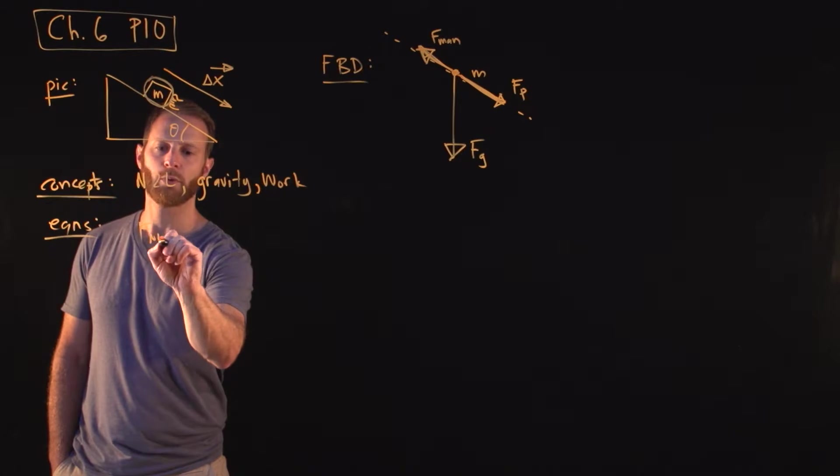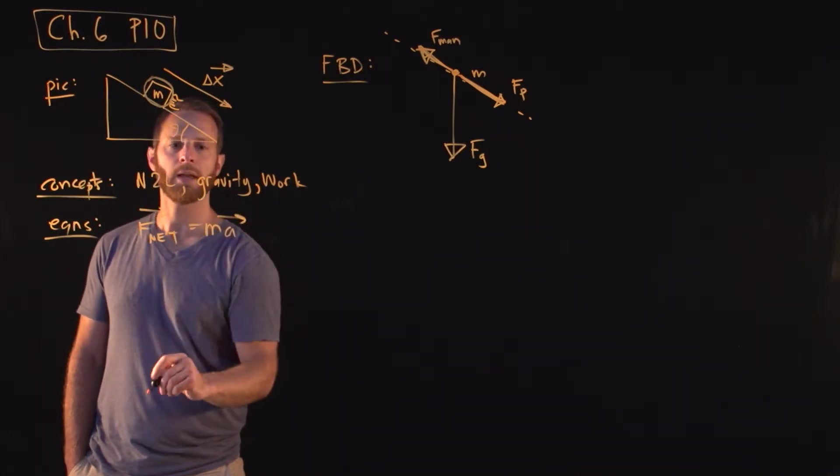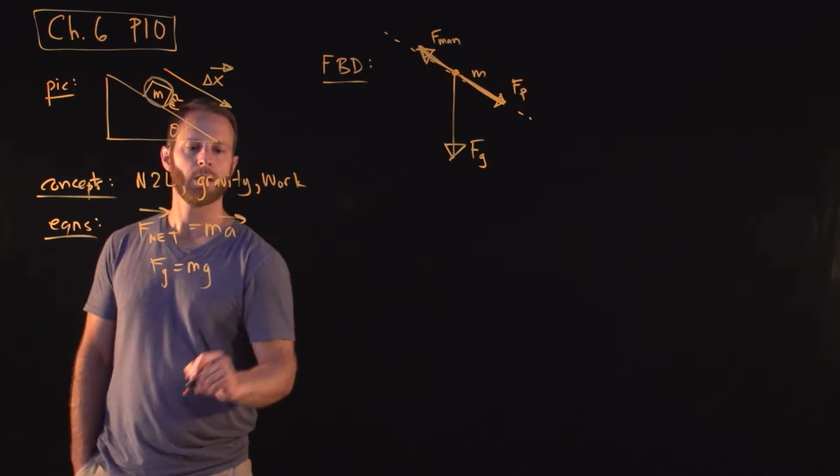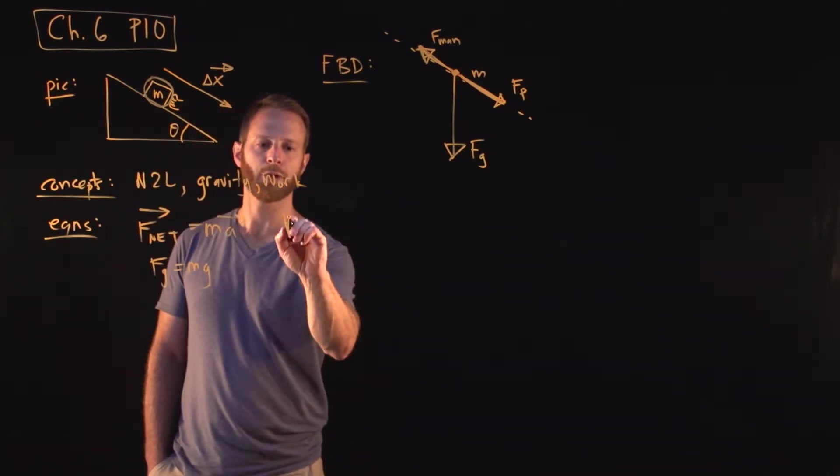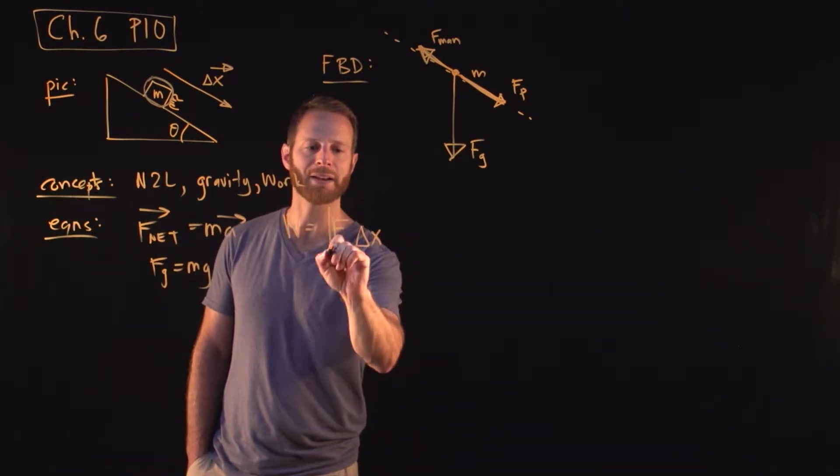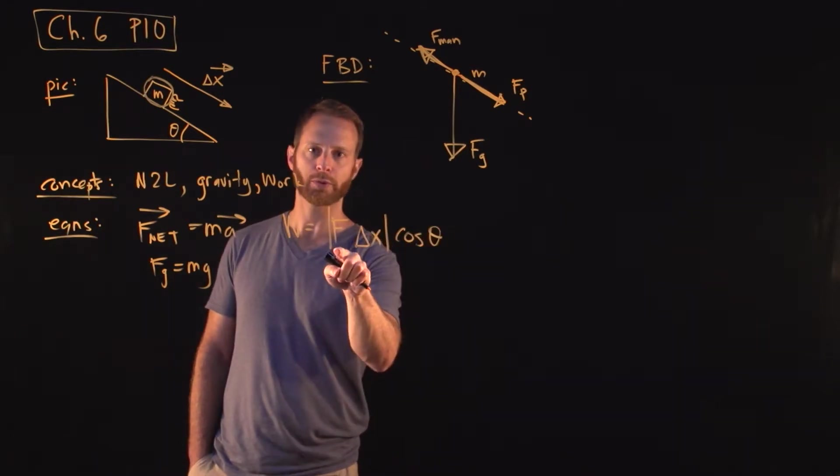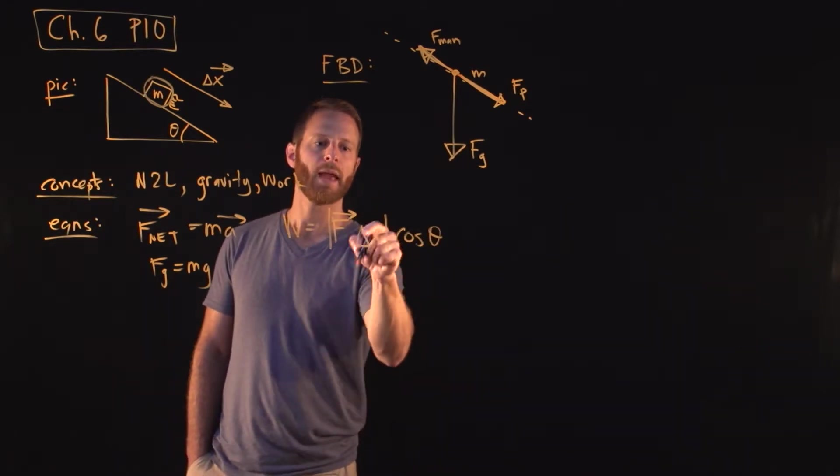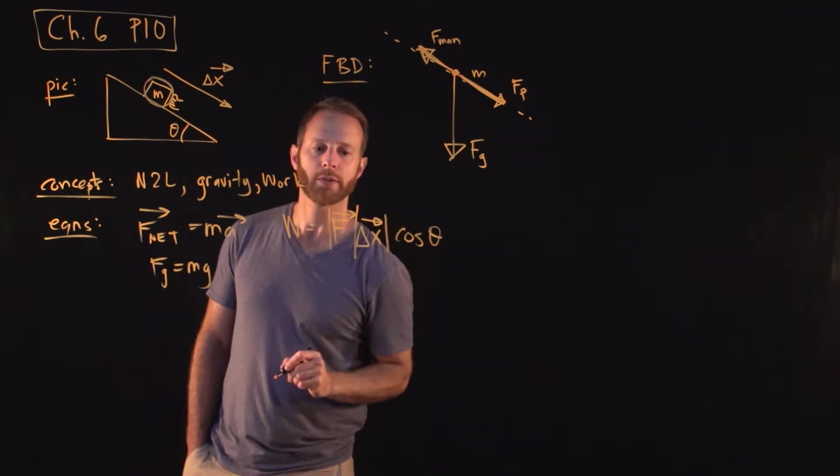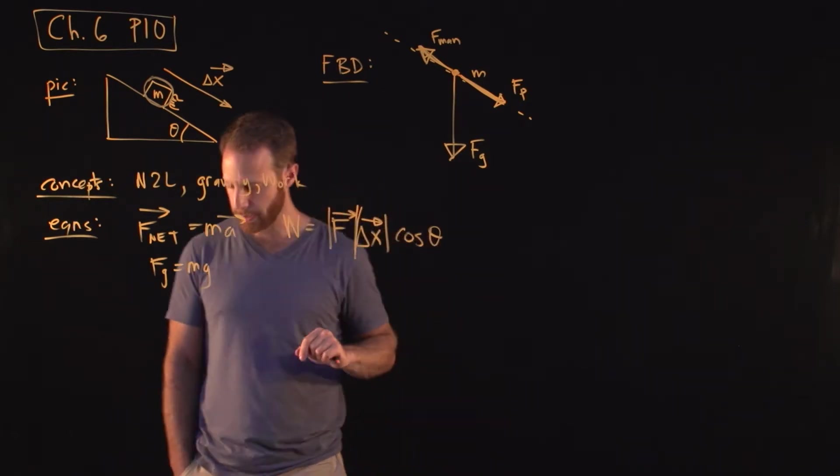So what equations might we need? Newton's Second Law: the net force, which is a vector, is equal to M times A. Force of gravity, I can put that in here, is Mg. Work is by definition W - whatever force you have, whatever the displacement is, the magnitude of those things times the cosine of the angle between the force direction and the direction of the displacement. I'll kind of write it like this. These two things are vectors, but this whole quantity is scalar.